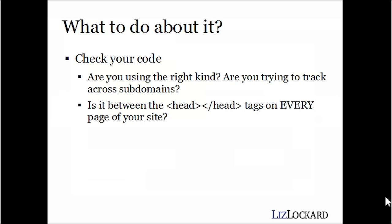So what do you do about it? There's no avoiding it — you have to just check your code. Check out your site. Make sure you're using the right kind of code. You can choose among three different types of code from Google Analytics, whether you're trying to track just one site or across subdomains. The other big check is to make sure it's between your head tags on your site — that just means it's in the header — and also on every single page of your site. After you've checked all of those things out, you should see all of these clues kind of disappear.